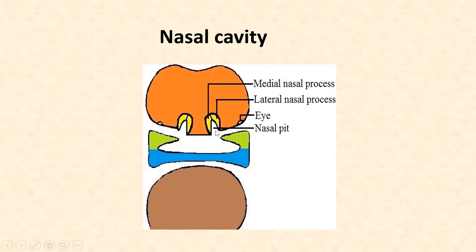The nasal pit enlarges to form the nasal cavity, and outpouchings of this nasal pit form the paranasal sinuses. This is how the development of the nose and nasal cavity takes place.